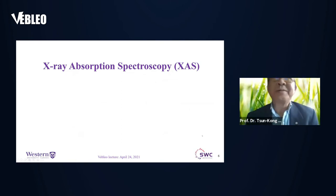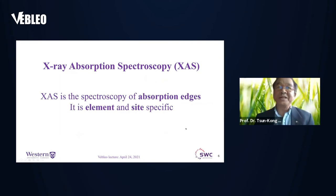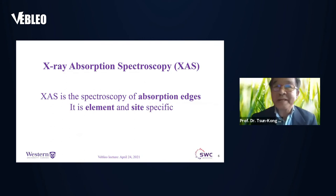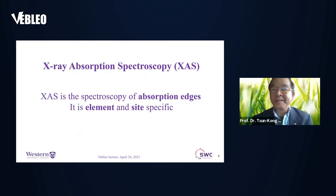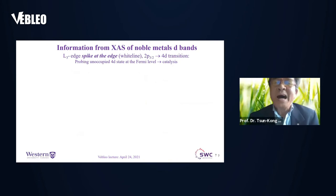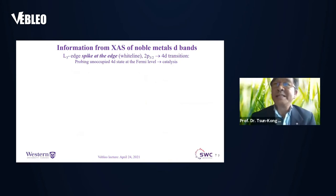To summarize: X-ray absorption spectroscopy is basically the spectroscopy of absorption edges of elements. Because each element has its characteristic specific absorption edge, this technique is element- and site-specific. Let me give you an example of how X-ray absorption spectroscopy can provide us information.